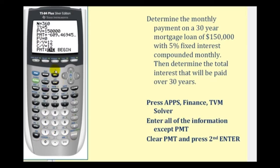And C/Y means compounds per year. It's compounded monthly, so this is also 12. Now all we have to do is go back up to the payment cell, clear this amount, and then press alpha enter, and it will tell us the required monthly payment. Notice that it's negative because we'll be paying that amount. So the payment would be $805.23 per month.